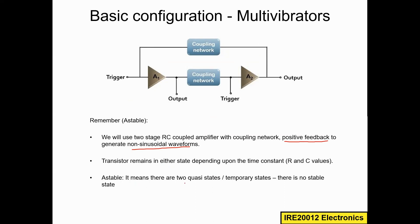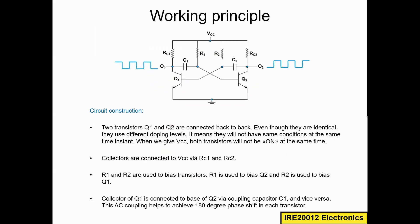The astable multivibrator has two quasi-stable, unstable, or temporary states. The state is not stable — it will change automatically. There is no stable state, which is why we call it an unstable or astable multivibrator.